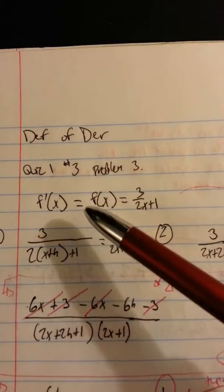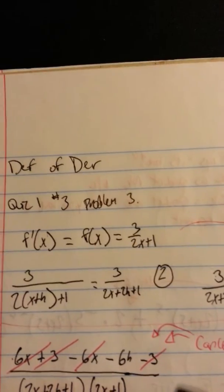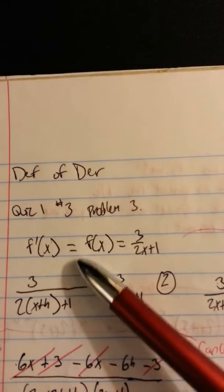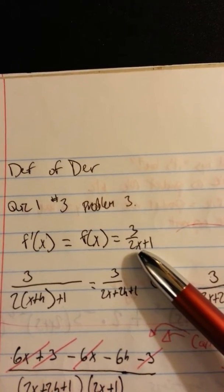Okay, so my problem here was to find f prime of x. Let me actually zoom in a little bit. It's a little bit blurry, zoom in, focus... there we go, sorry. Find f prime of x when f of x equals 3 over 2x plus 1.